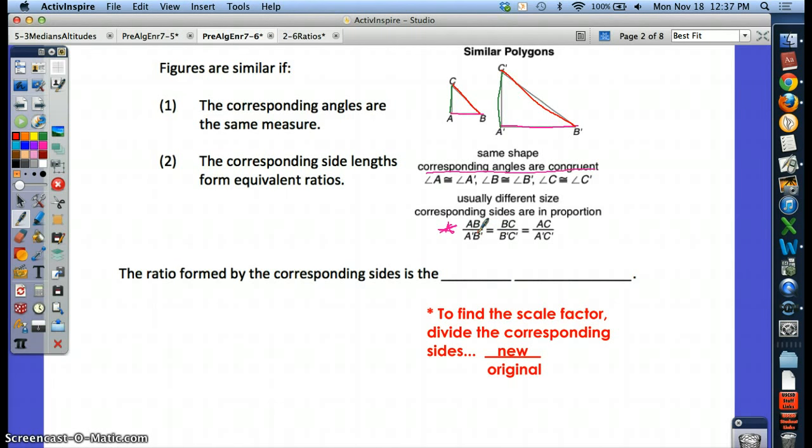The ratio formed by the corresponding sides is called the scale factor, and the scale factor is always going to be written new over original. Write that in your notes underneath scale factor or next to scale factor: always do the new over the original.